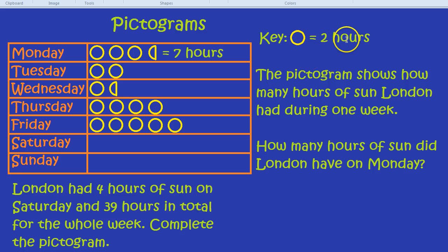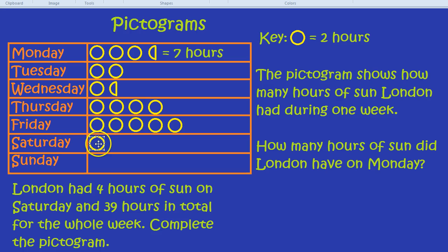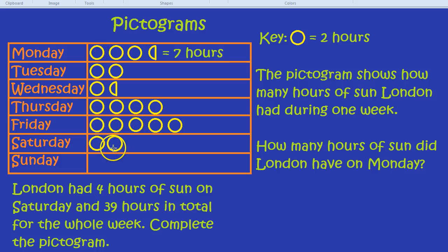Well, two hours of sun is one circle. If we do that for Saturday — there we go — that's two hours of sun. And four hours, therefore, is going to be another circle. So there we go. For Saturday, we have four hours represented by two circles.